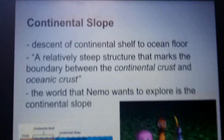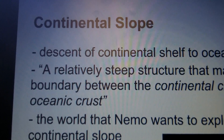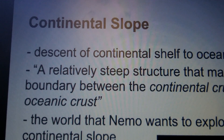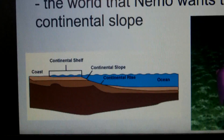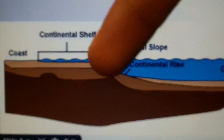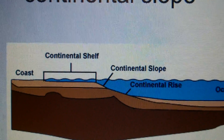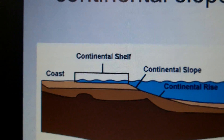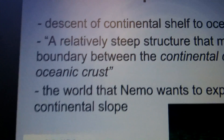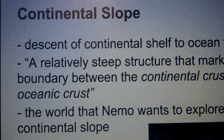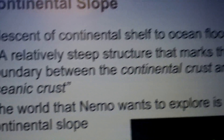The continental slope. Many of you might not know what the definition of a continental slope is and where it's located. You see, the continental slope is a rise between the ocean floor to the continent. The definition of continental slope is a relatively steep structure that marks the boundary between the continental crust and the oceanic crust.